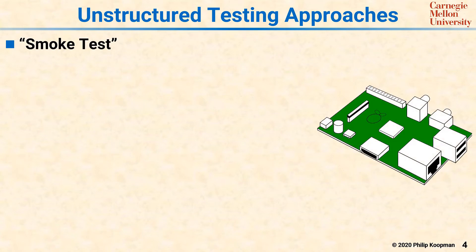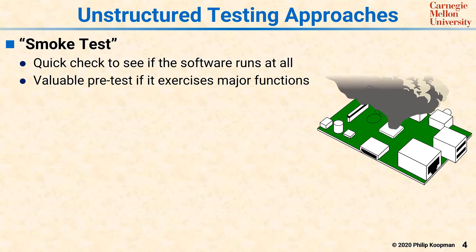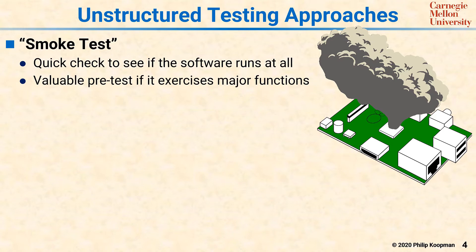The first one is smoke testing. A smoke test comes from the hardware world, where when you turn the power on, sometimes smoke comes out of one of the chips, and that's a bad thing — it means you may have a design error. For software, it's the same thing. It's much less common to have smoke actually pour out of a computer due to your software defect, but the point is that you're doing a quick check to see if all the software runs. So it's just like applying power to a piece of hardware — you're not asking what it does, you're asking does it not catch fire.